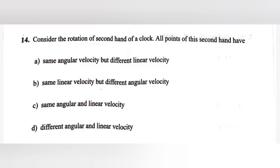Question 14: Consider the rotation of a second hand of a clock. All points of this second hand have: A) Same angular velocity but different linear velocity. B) Same linear velocity but different angular velocity. C) Same angular and linear velocity. D) Different angular and linear velocity. Answer: A. Same angular velocity but different linear velocity.